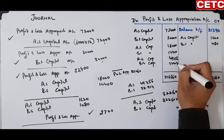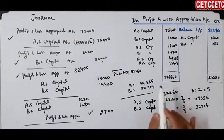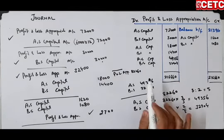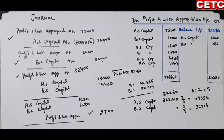Is tarike se Profit and Loss Appropriation Account bhi close ho jaayega. Yeh aapka question complete ho gaya. Agar koi point samajh nahi aaya to comments ke zariye pooch sakte hain.